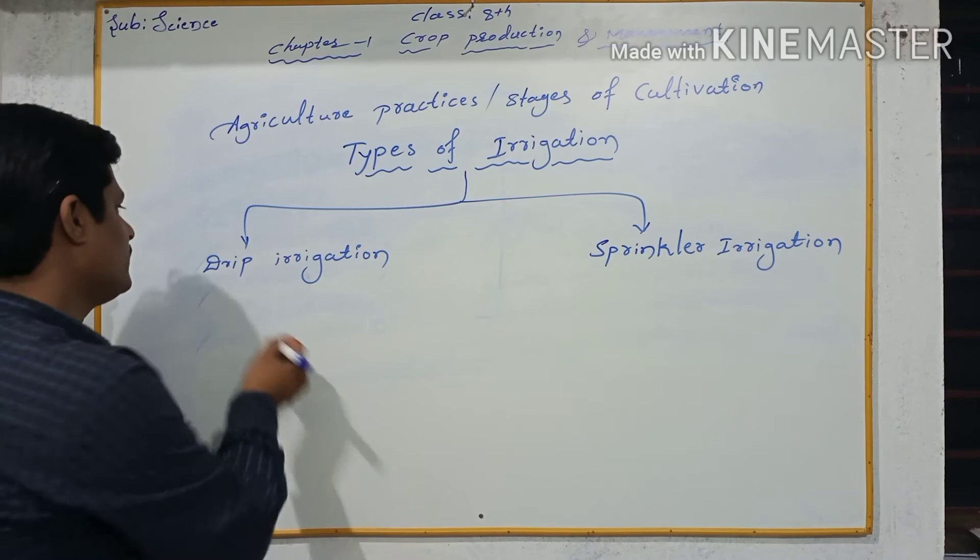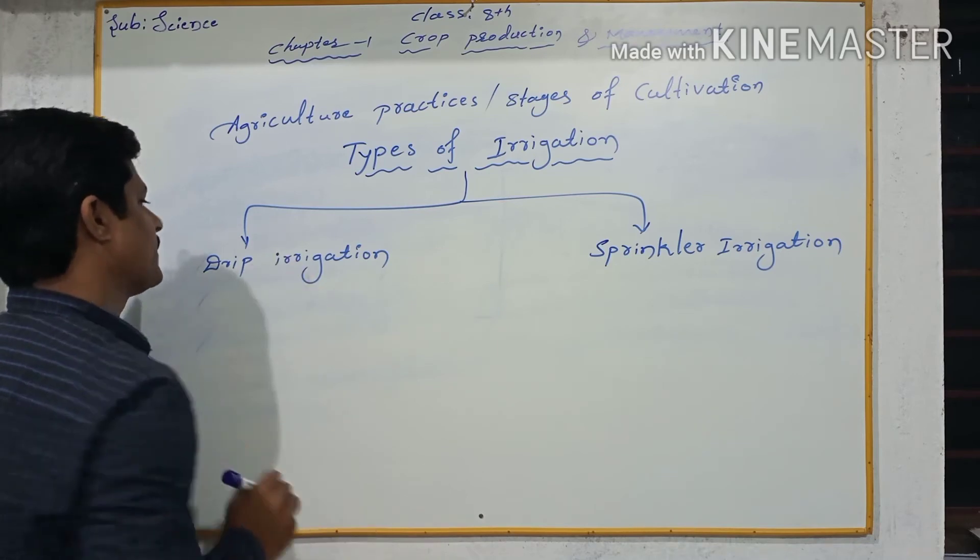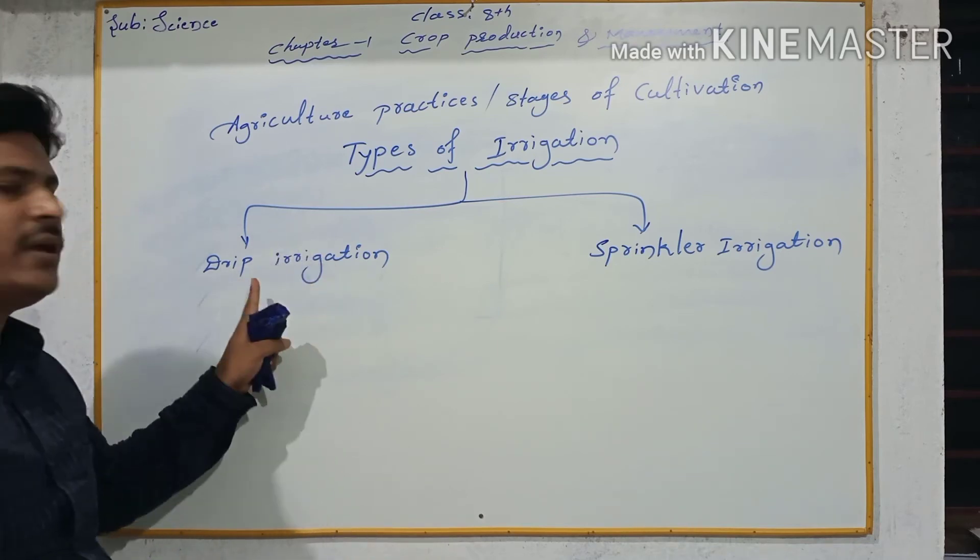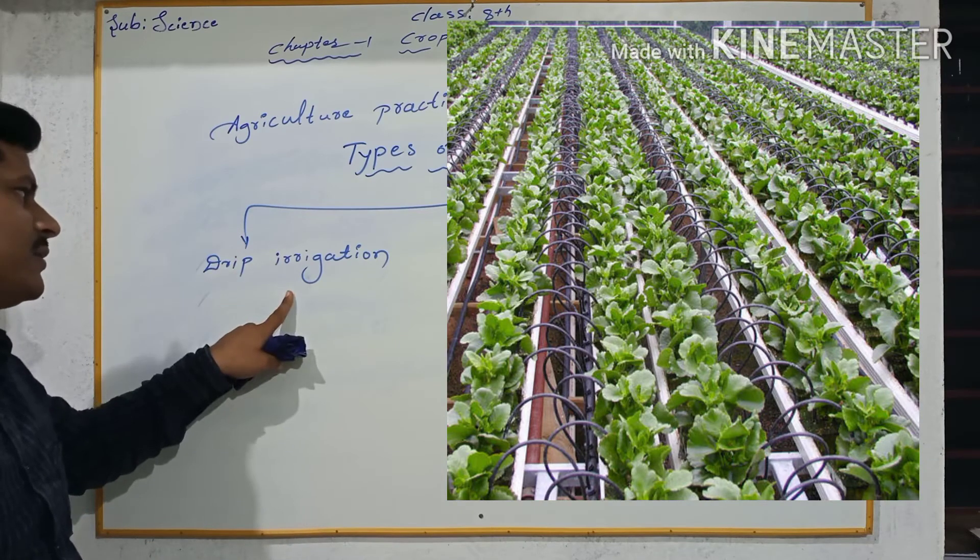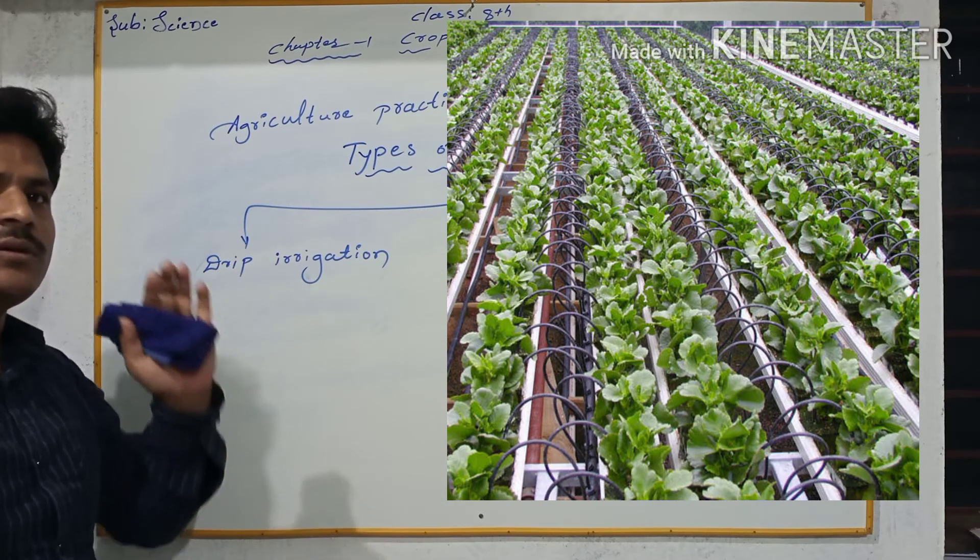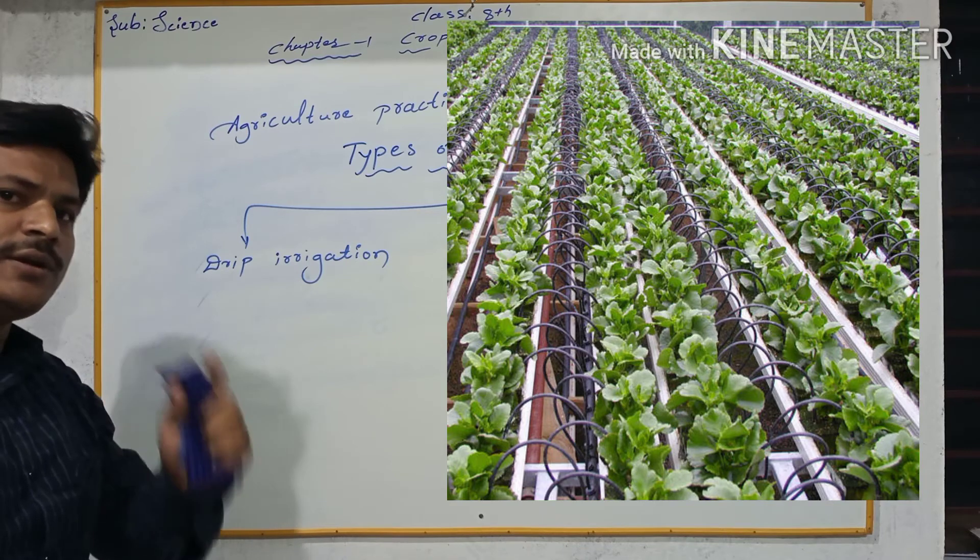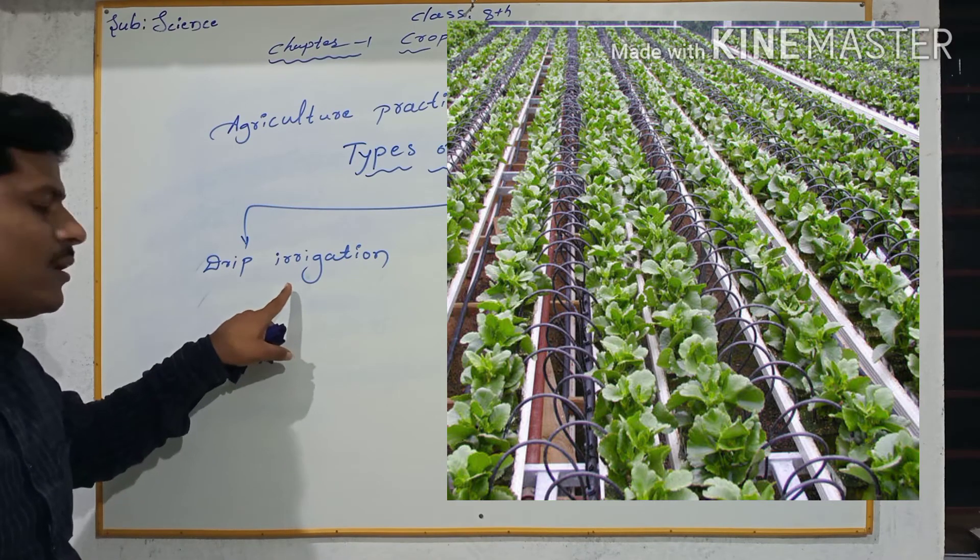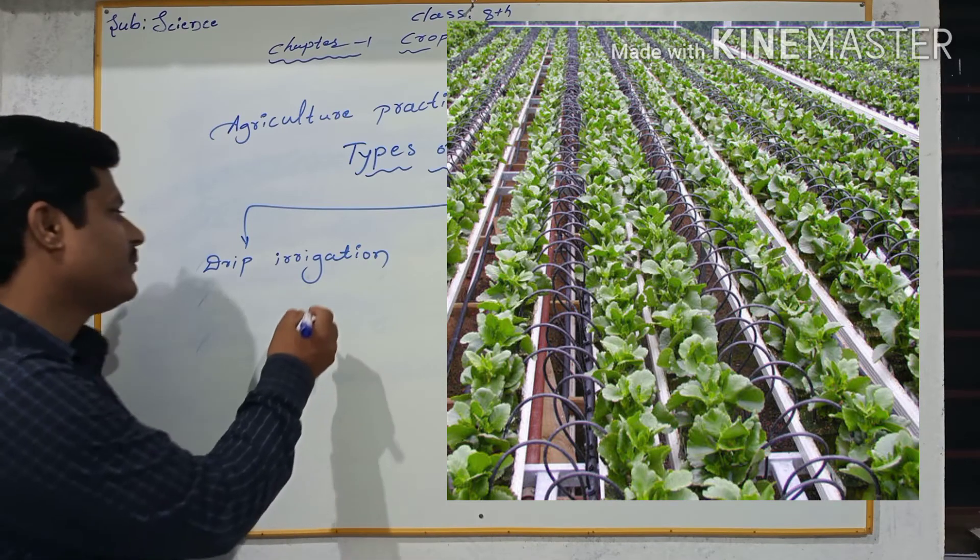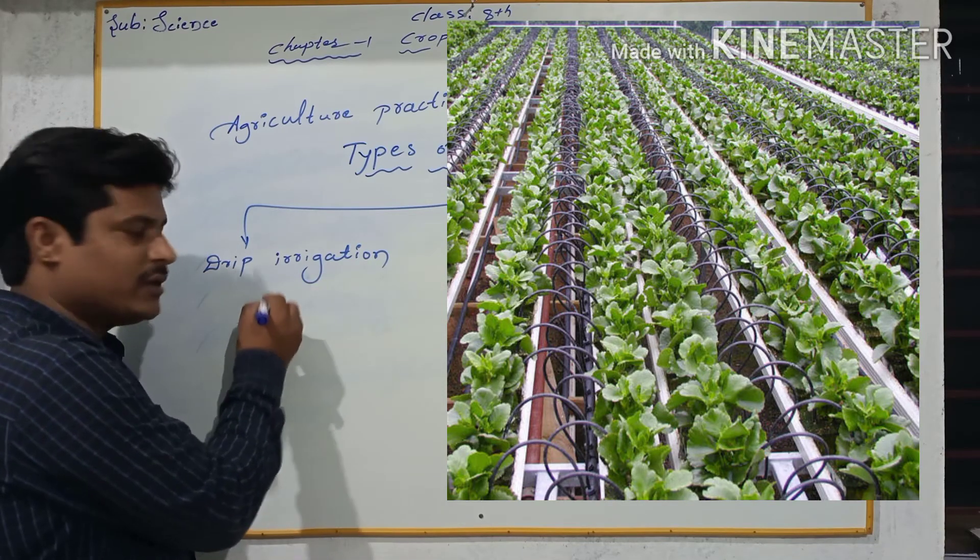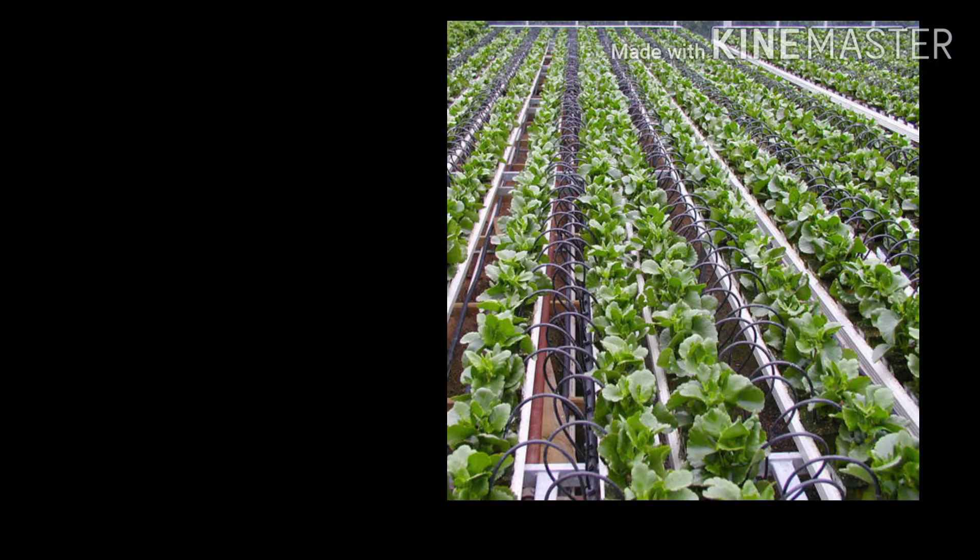Okay, let us know about them one by one. First one, drip irrigation. So this is a very effective method of irrigation. In this irrigation, the water falls drop by drop near to the roots of the plant. So this is a very good method of irrigation, and this will save the water.